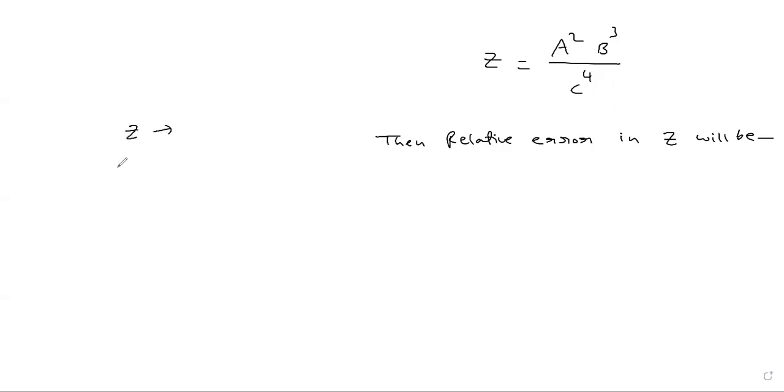Z is a physical quantity and relative error is delta Z by Z. This is known as relative error. Delta Z by Z into 100, in percent this is known as percentage error.